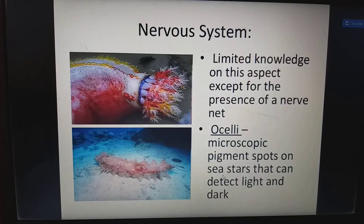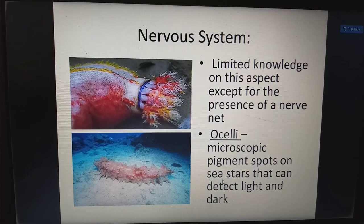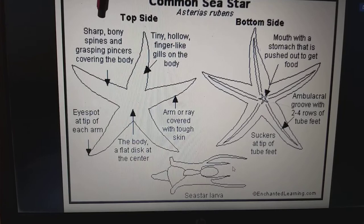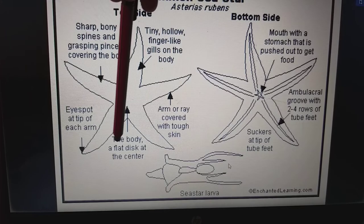The nervous system has limited knowledge except for the presence of a nerve net. Ocelli are microscopic pigment spots on sea stars that can detect light and darkness. The common sea star has: on the top side — sharp bony spines and grasping pincers covering the body, tiny finger-like gills, arms and rays covered with very tough skin, a flat disc at the center, and eye spots at the tip of each arm.